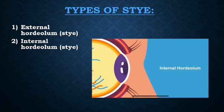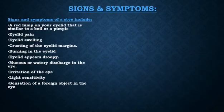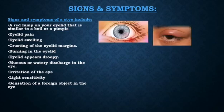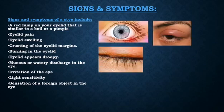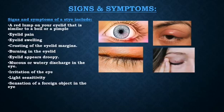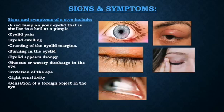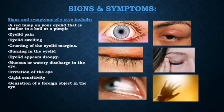A stye can occur on either the upper or the lower eyelid. Possible signs and symptoms of a stye include localized swelling of the eyelid, mild pain in the eyelid, sensitivity to touch, wetness of the affected eyelid, possible crusting of the eyelid margins, possible burning in the eye, eyelid appears droopy, mucus or watery discharge in the eye, irritation of the eye, light sensitivity, and sensation of a foreign object in the eye.